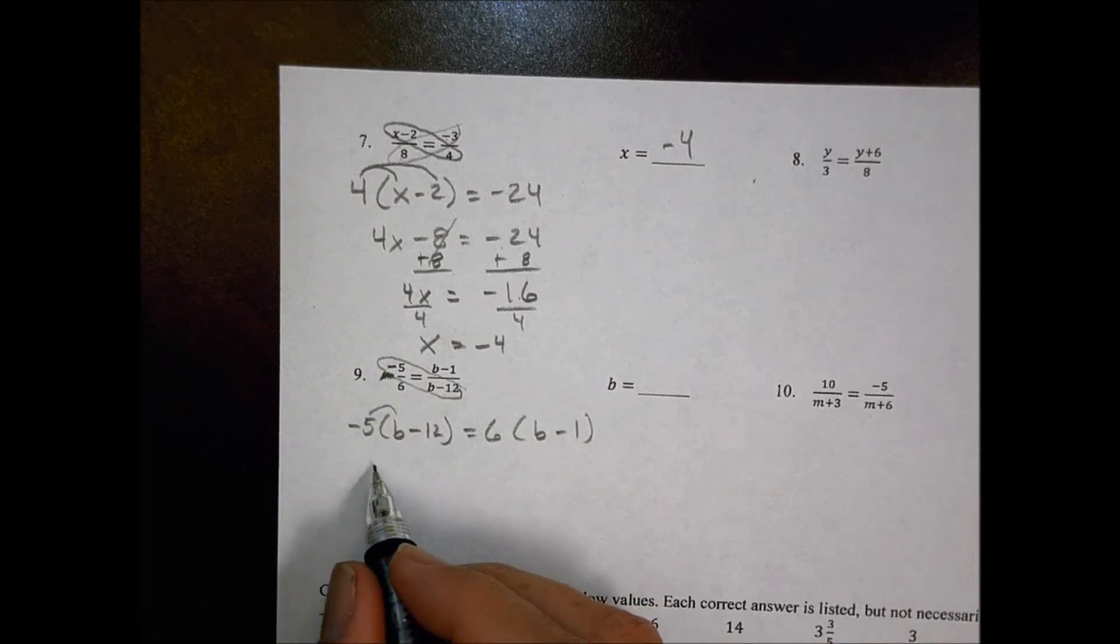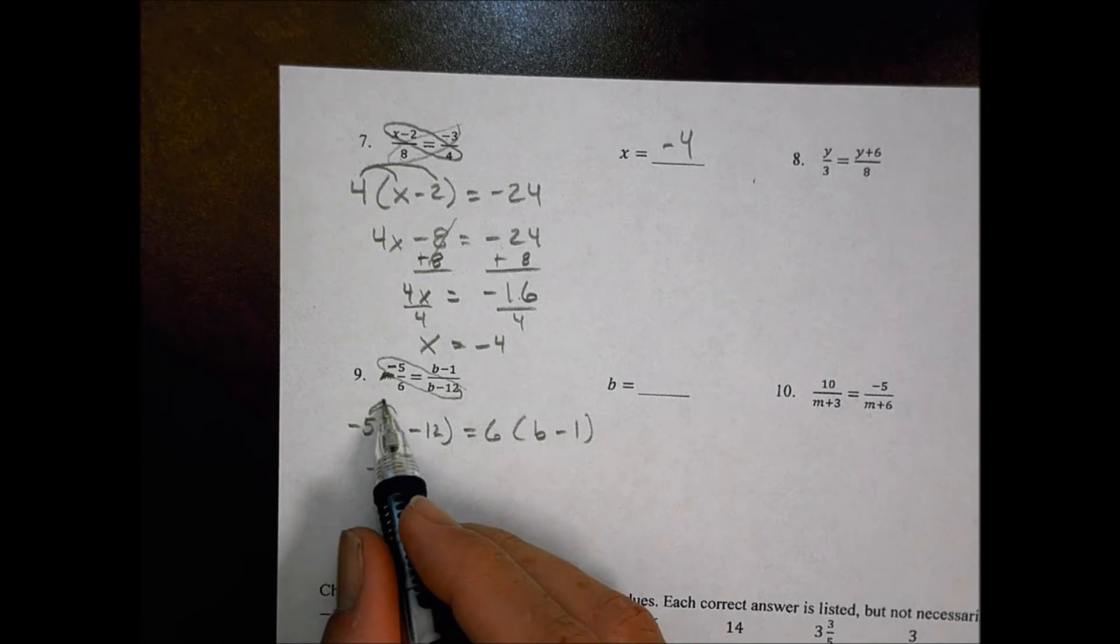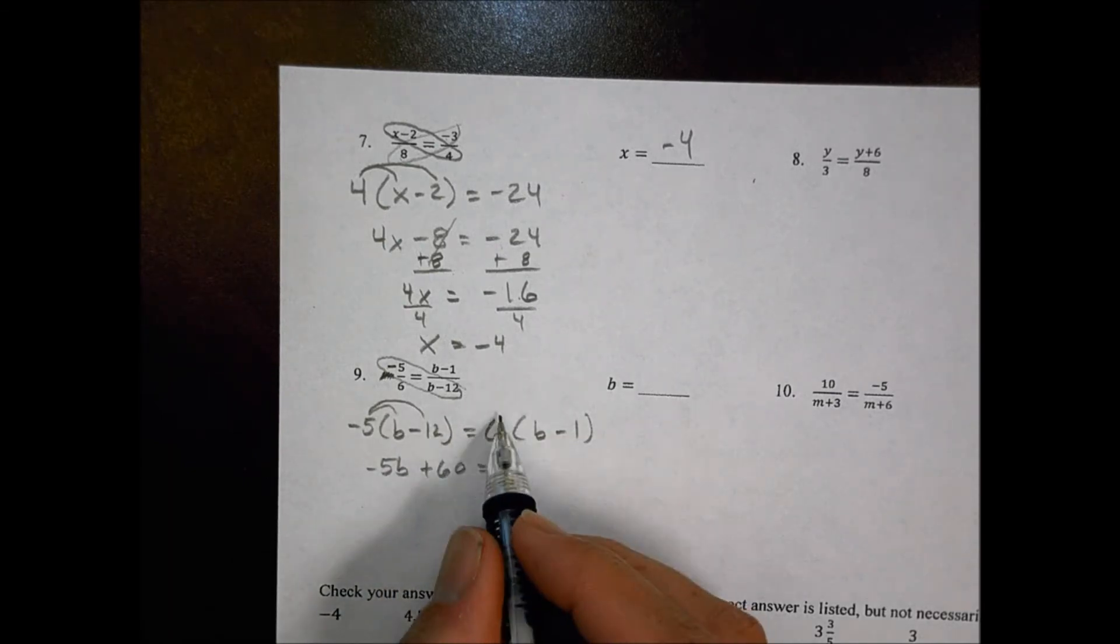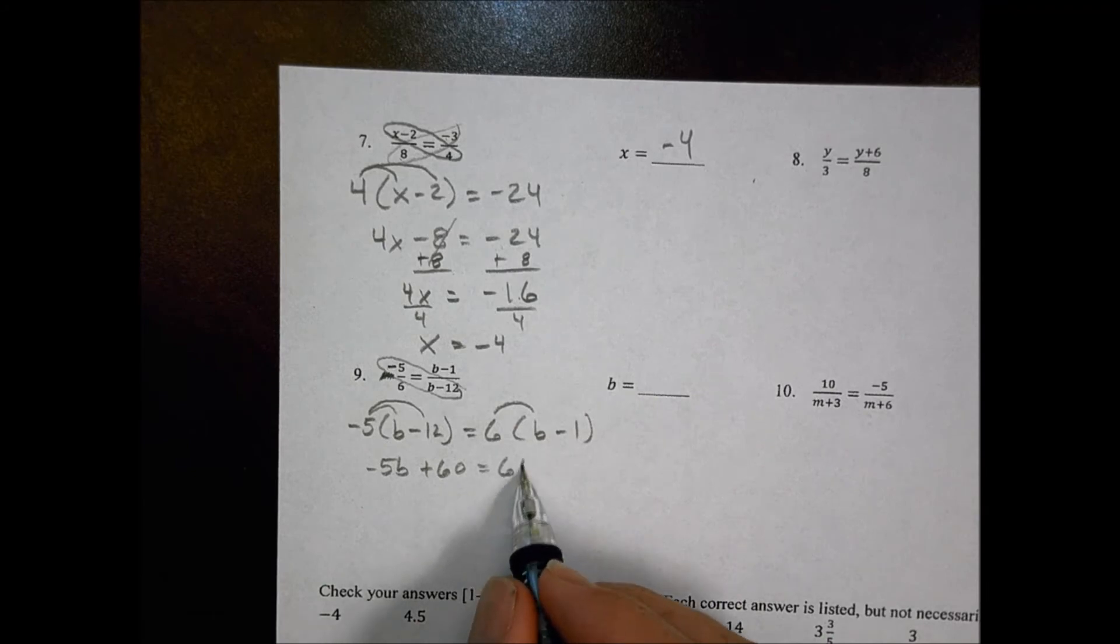Now I can distribute, and I have negative 5b, and negative 5 times negative 12 is a positive 60. And set that equal to 6 times b is 6b, and 6 times minus 1 is negative 6.